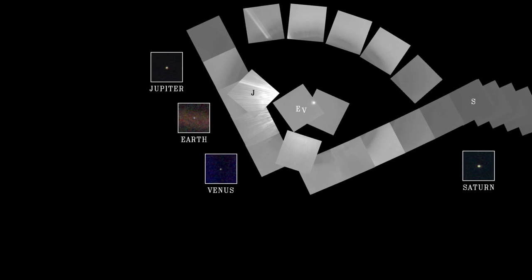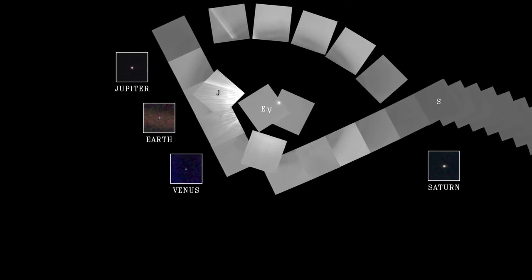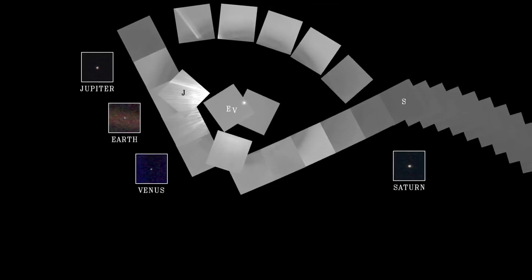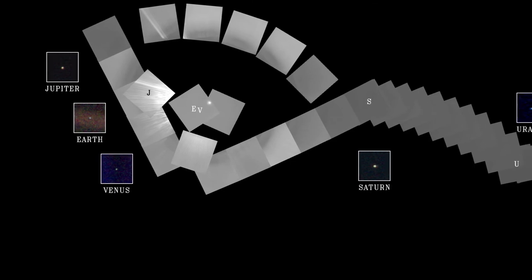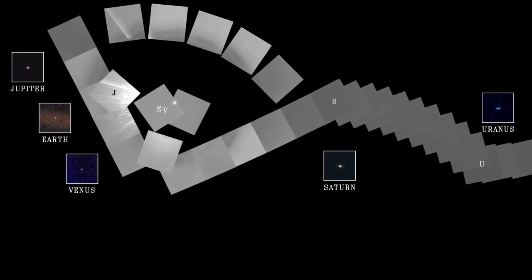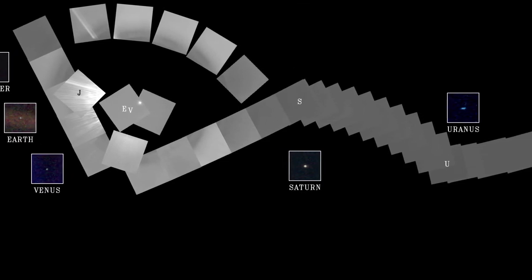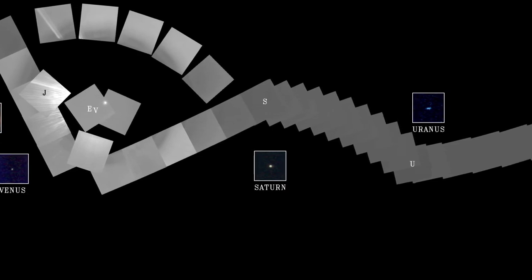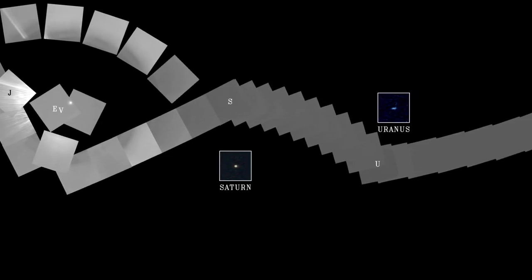Voyager 1 took 60 images and managed to see Earth in three, in which it comprised 0.12 pixels of the 640,000 in each frame. The composite photo was among the last taken by the spacecraft in a series that completed a family portrait of the solar system.